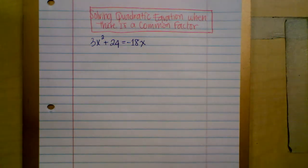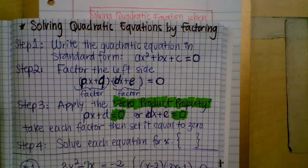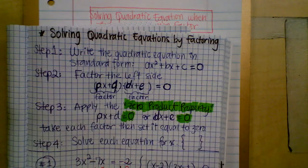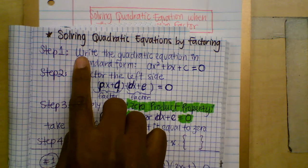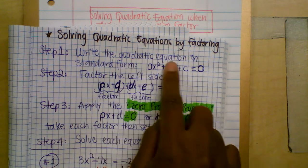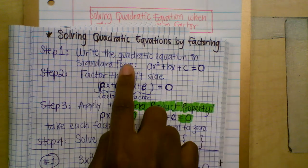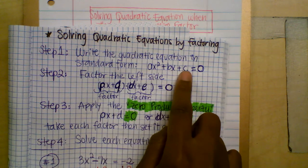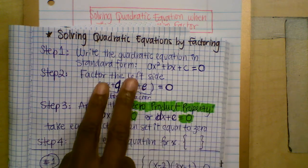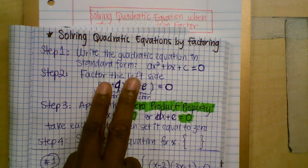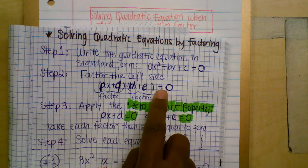Before I show you how to solve, I want to make sure that you have the steps down. The first step is to write the quadratic equation in standard form: as² plus bs plus c equals zero. You're going to factor the left side to get two factors, and don't forget to set it equal to zero.